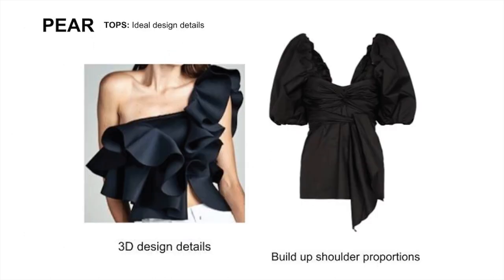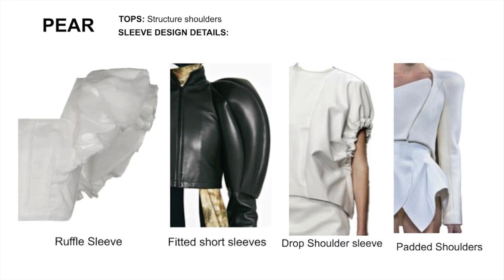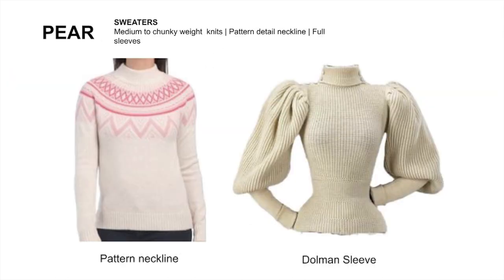For tops, try to add volume to the top with 3D detail and widen the shoulders. Here are some examples of necklines to draw attention to the top. On the sleeve, build volume to the shoulders. These are some examples of tops to draw attention upwards, away from the hips. For sweaters, go with medium to chunky weight and shift focus upwards or add volume to the shoulders.